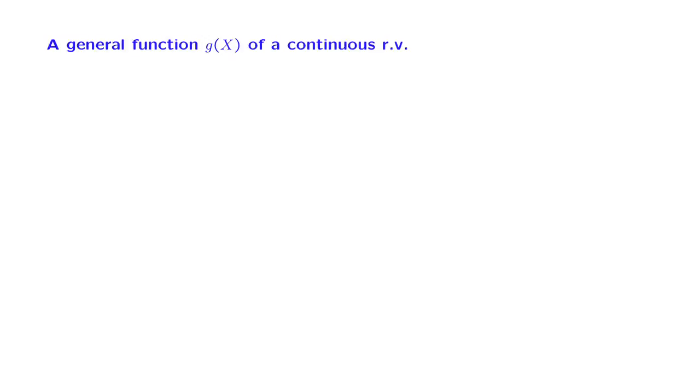In this important segment, we will develop a method for finding the PDF of a general function of a continuous random variable, a function g of x, which in general could be nonlinear. The method is very general and involves two steps.